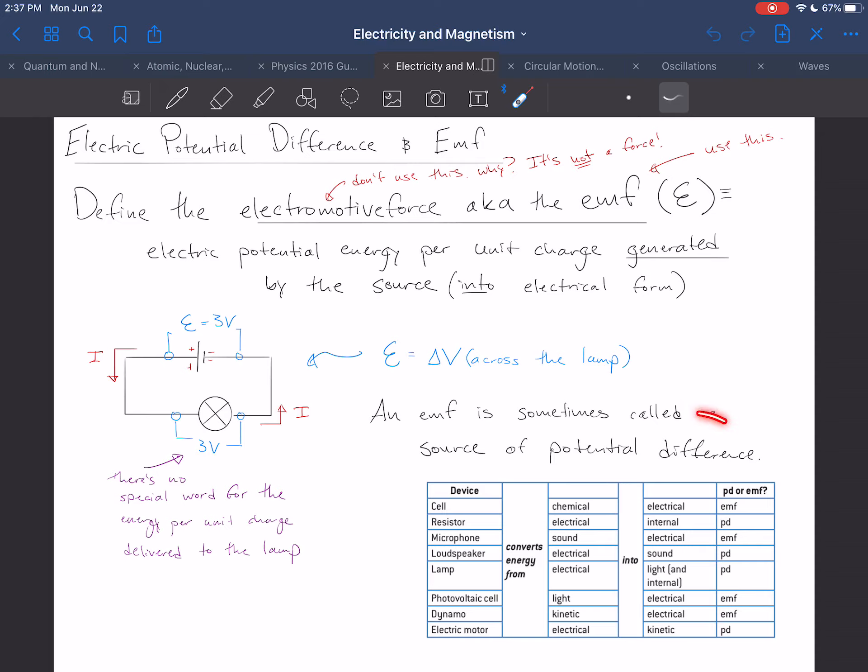And so sometimes we use the phrase potential difference to contrast with the EMF. So we'll say, what is the potential difference across this lamp? Is it equal to the EMF? For example, you might say that, where we know that EMF is a potential difference. But when we say the potential difference there, we mean this gap right here, not this gap.